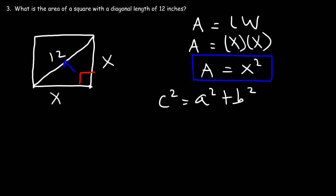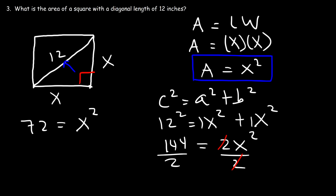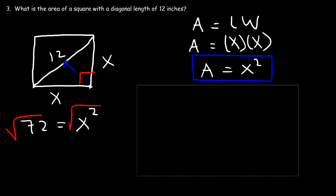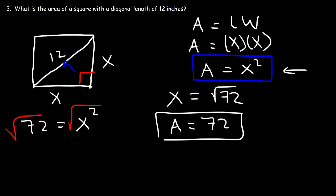c, the hypotenuse, is 12. a is equal to x and b is equal to x. So 12 squared is x squared plus x squared. 1x squared plus 1x squared is 2x squared. And 12 squared is 144. So first we need to divide both sides by 2. 144 divided by 2 is 72, and that's equal to x squared. Now let's take the square root of both sides. So x is equal to the square root of 72. The area a is equal to x squared, and x squared is 72, so the area is just 72.